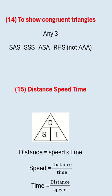To show congruent triangles, you need to prove three things. For example, SAS stands for side, angle, side. Just make sure you don't use AAA, angle, angle, angle, because this will prove similar triangles.